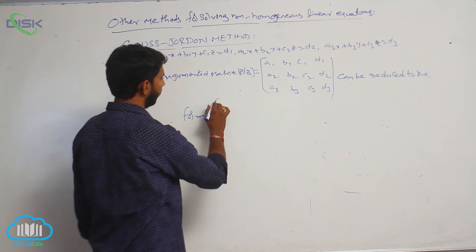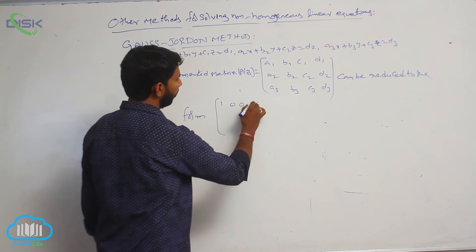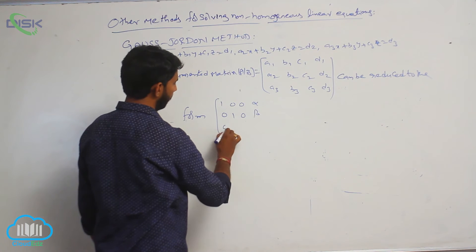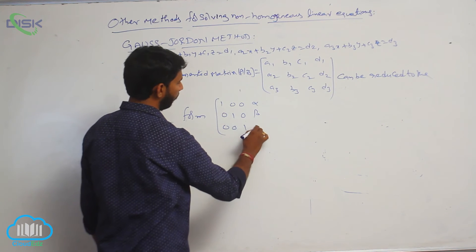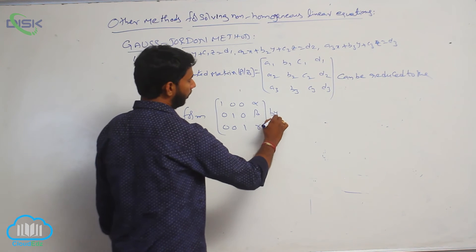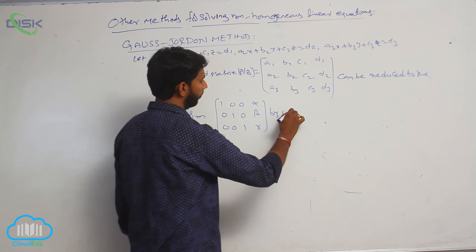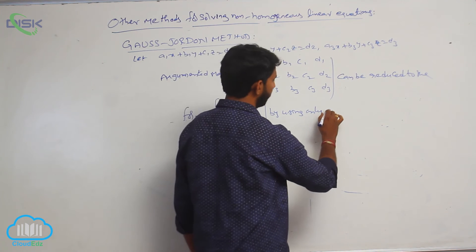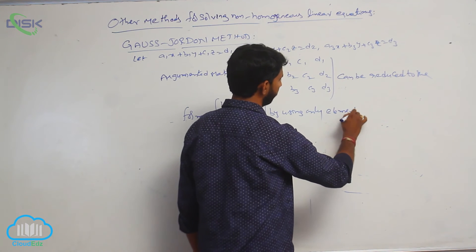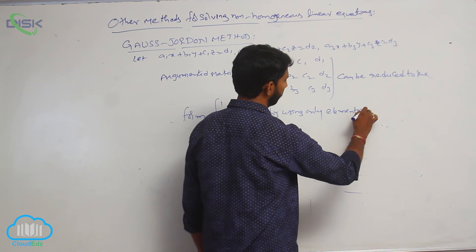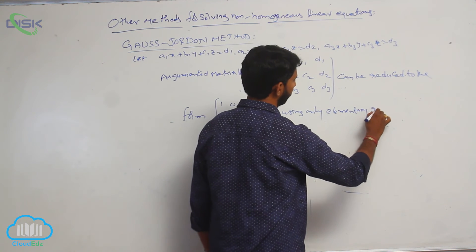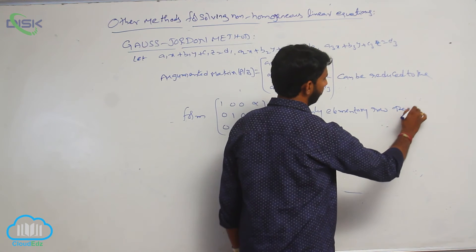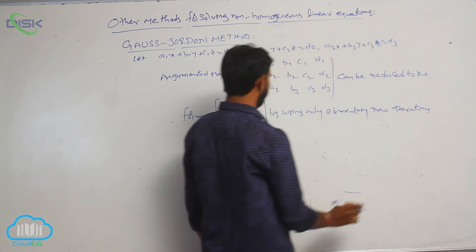The augmented matrix can be reduced to the form: 1 0 0 α / 0 1 0 β / 0 0 1 γ, by using only elementary row operations.